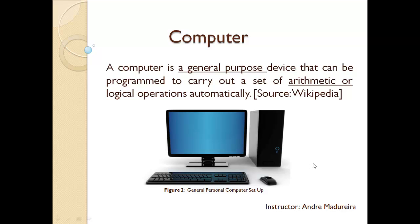A computer is a general-purpose device that can be programmed to carry out a series of arithmetic or logical operations automatically. This definition is from Wikipedia, and it's the best definition I could find for a computer. You may ask: does a computer just do arithmetic and logical operations? My computer can see me, talk to me, work with my camera — that doesn't sound right. But actually, that is mainly arithmetic.